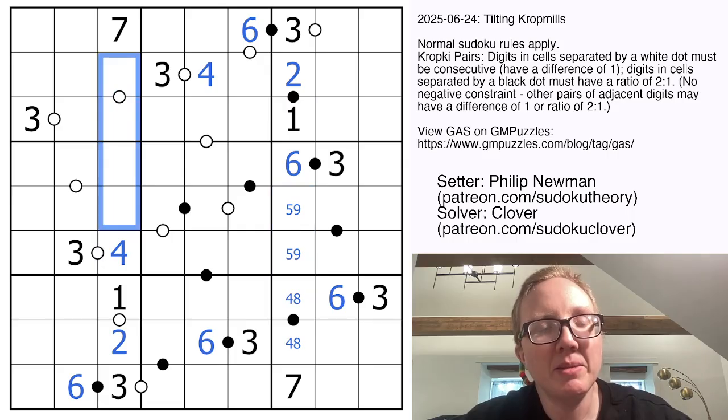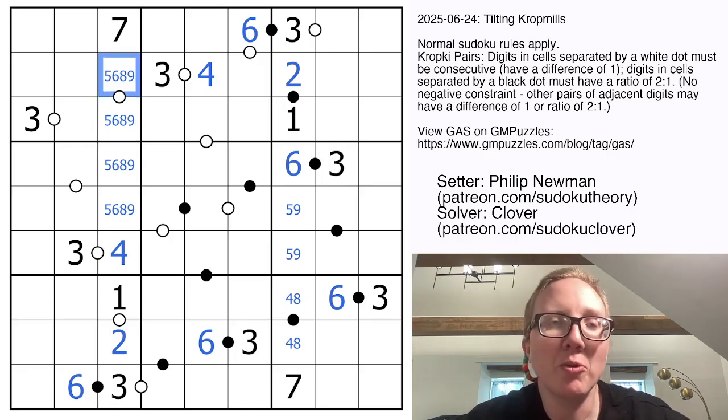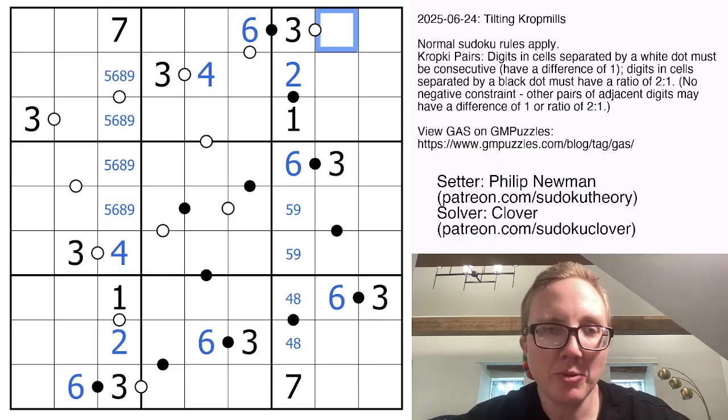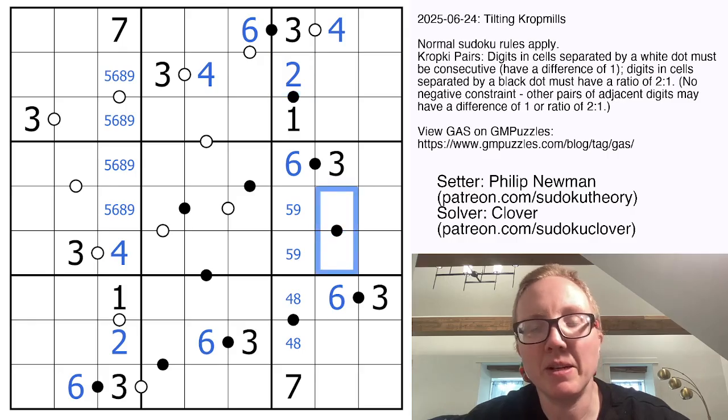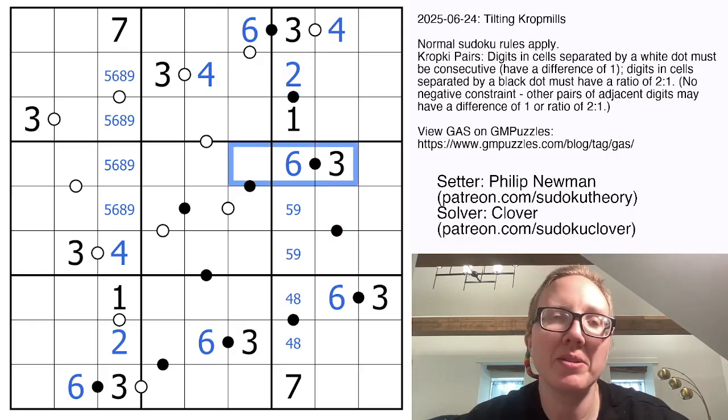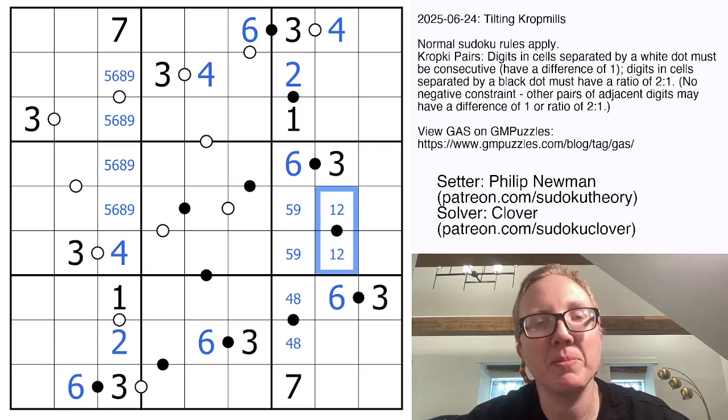In this column I need 5, 6, 8, and 9. This could be either a 5, 6 pair or an 8, 9 pair. This 3 has to be next to 2 or 4, so it's going to be next to 4. That tells us this pair in a 1 to 2 ratio doesn't have 3, 6, or 4, so it must be 1 and 2.